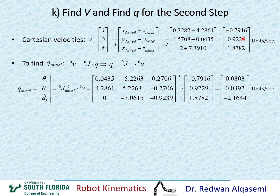Plugging in the initial Jacobian and Cartesian velocity vector and performing the inversion and multiplication gives the initial joint velocities in units per second. We call these 'initial' because Q dot changes at every time step as the Jacobian changes with every new set of joint values.